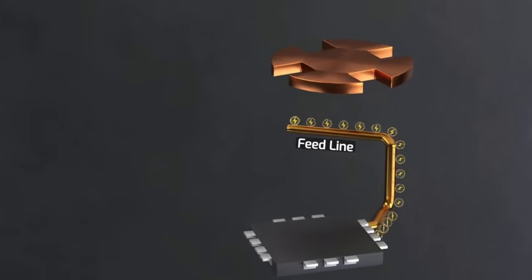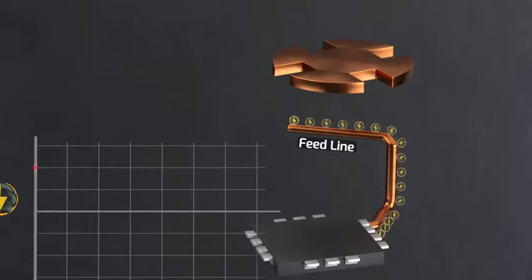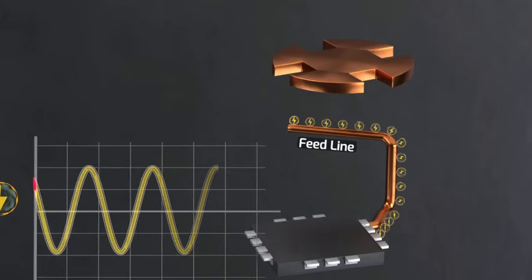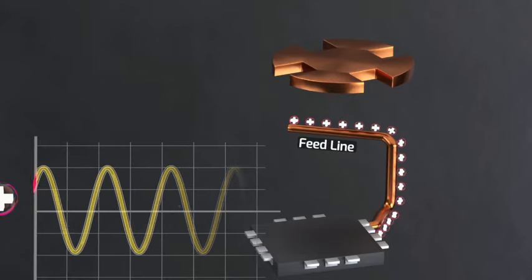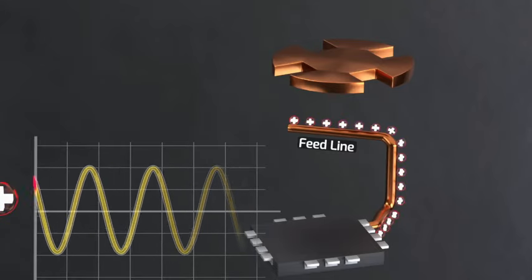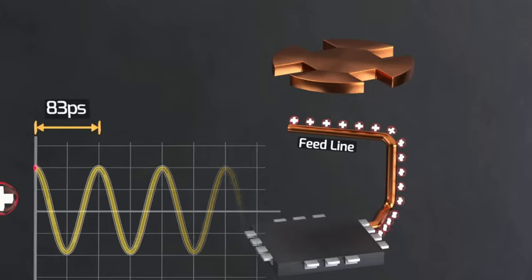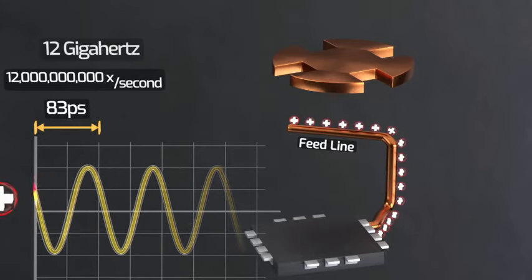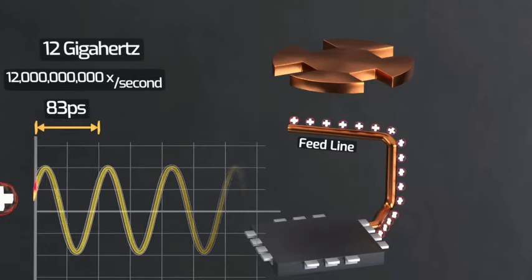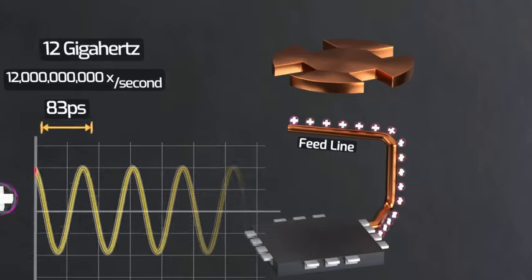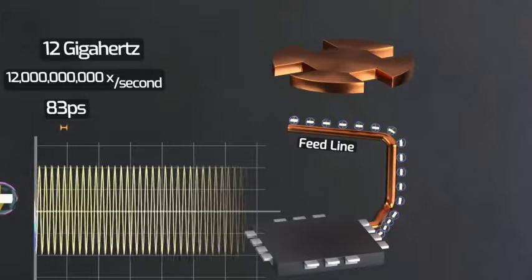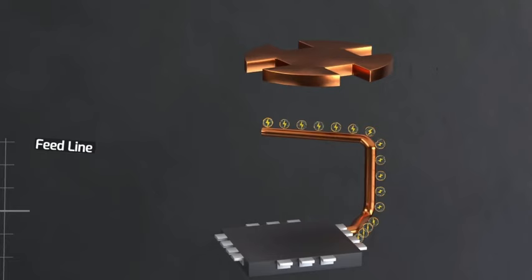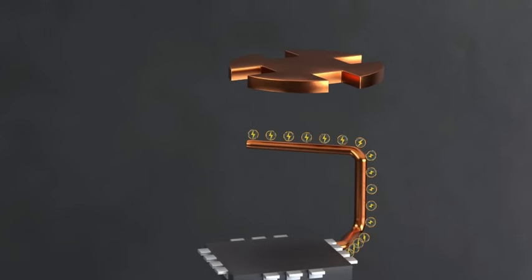To start, at the bottom, we have a microstrip transmission line feed coming from one of the small microchips. This transmission line feed is just a copper PCB trace or wire that abruptly ends under the antenna stack. We send a 12 gigahertz high frequency voltage or signal to the feed wire, which is a voltage that goes up and down in a sinusoidal fashion, going from positive to negative and back to positive once every 83 picoseconds, 12 billion times a second, or 12 gigahertz.